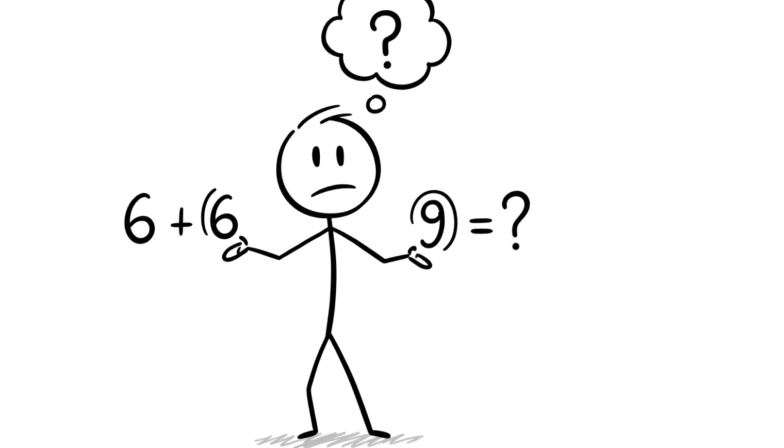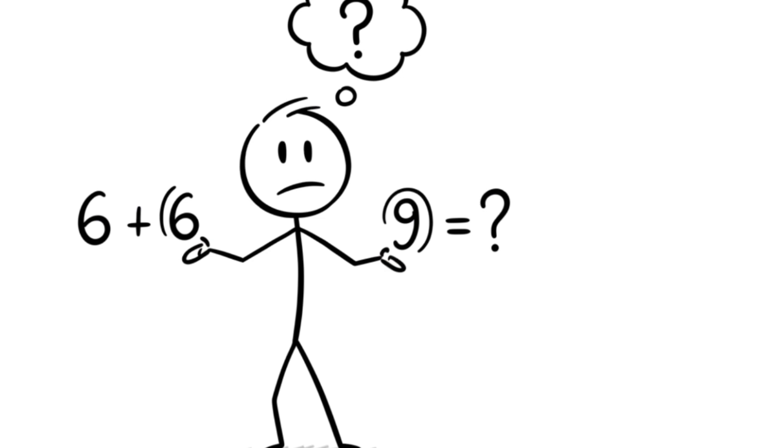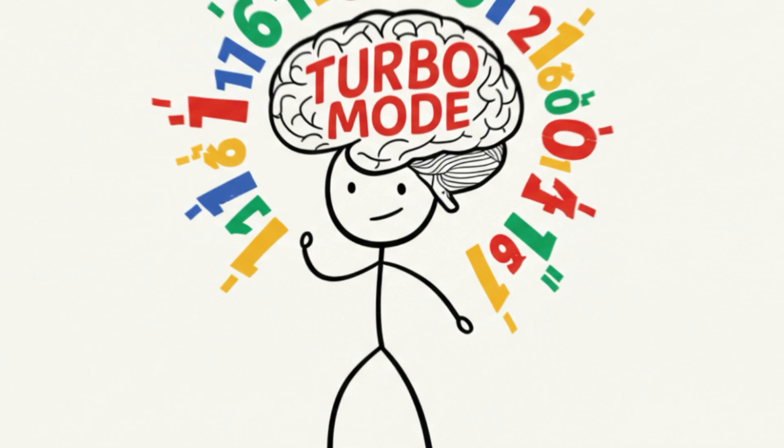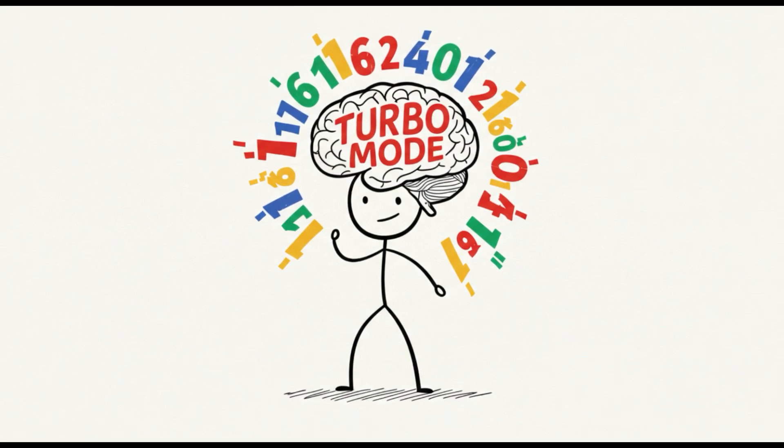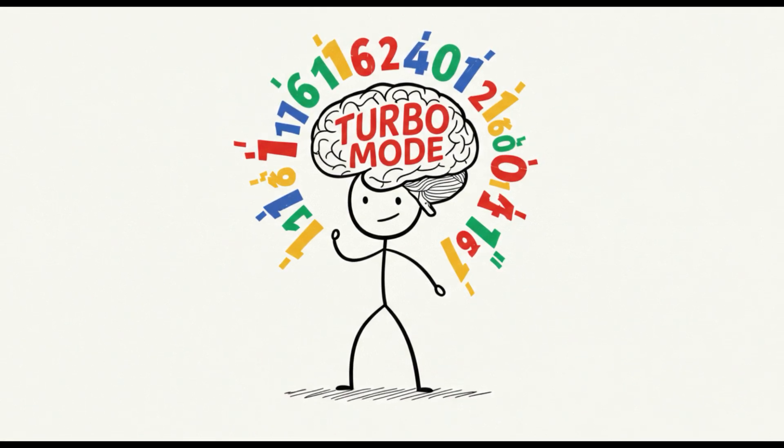Now multiply 3 times 4. That's 12. Final result? 9,312. You didn't memorize anything. You just visualized. That's the trick.